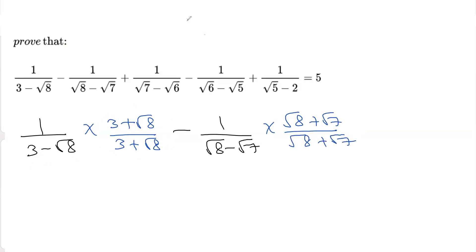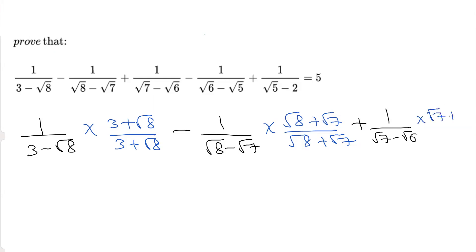The next term is plus 1 over root 7 minus root 6. We rationalize again by multiplying and dividing by root 7 plus root 6.